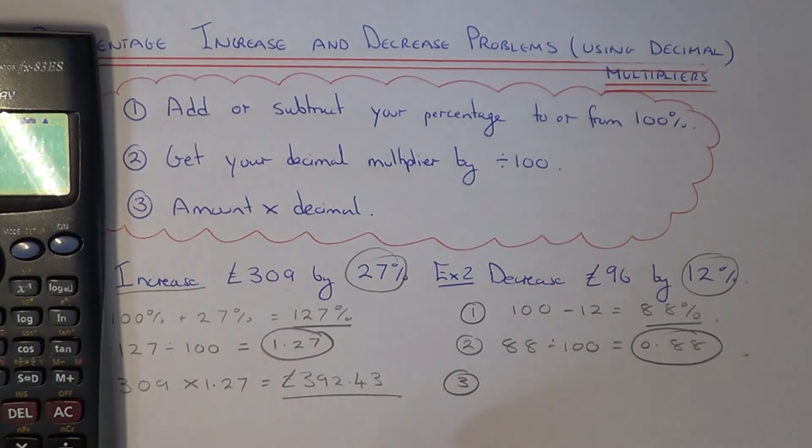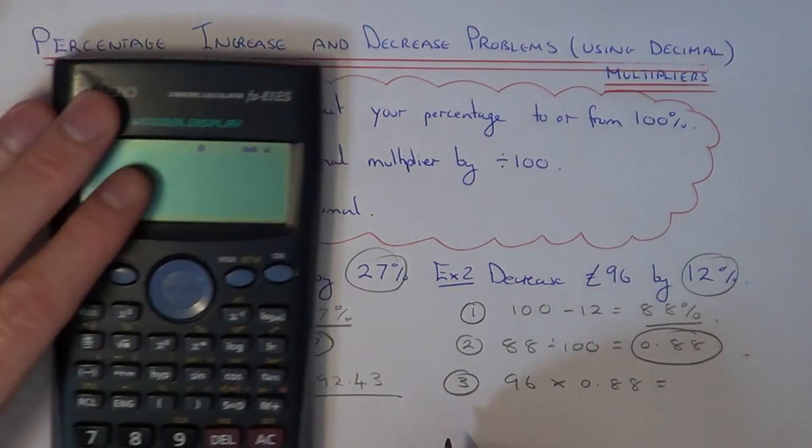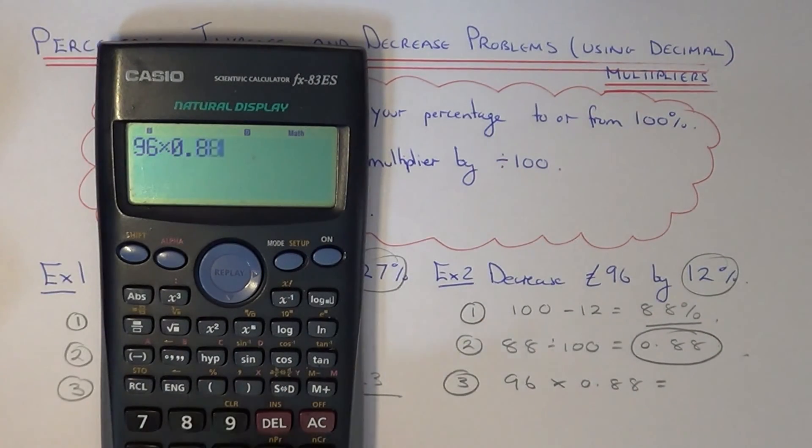The third and final step is to multiply the amount by the decimal multiplier. So if we do 96 times 0.88, this gives us an answer of £84.48.